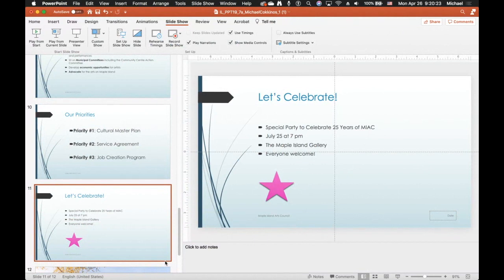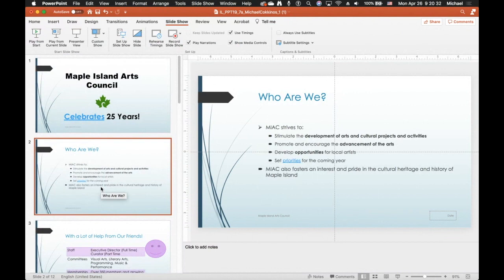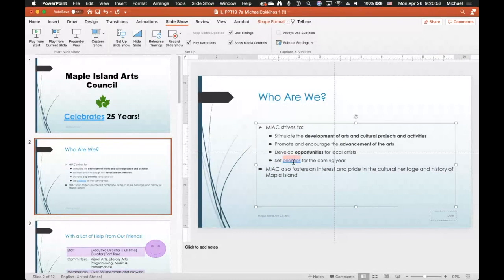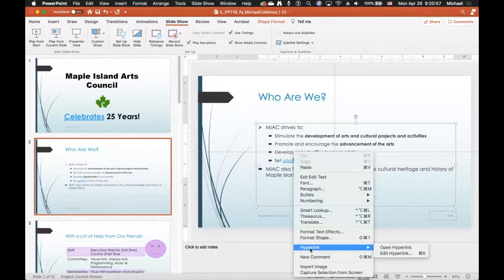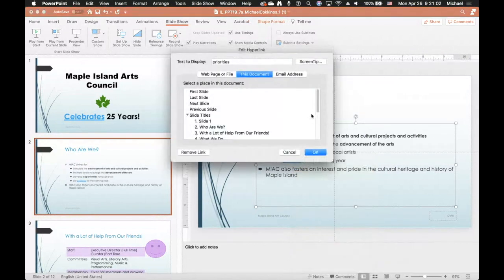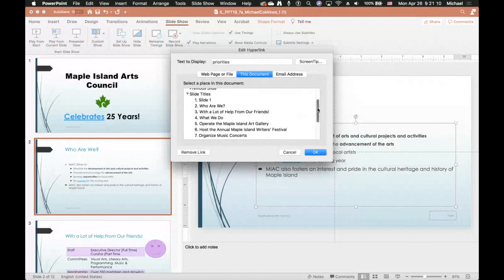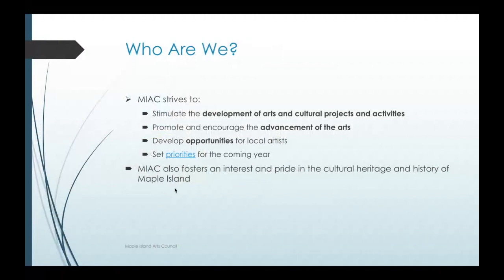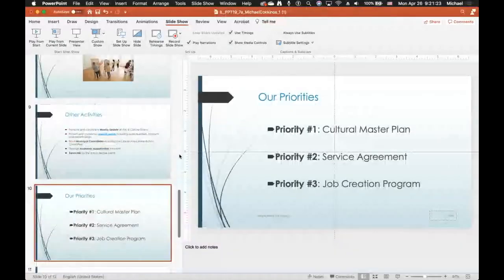On slide two, we need to edit the hyperlink for 'Priorities' so it goes to slide 10. Right-click, choose 'Edit Hyperlink,' and select slide 10 — 'Our Priorities.' We have the option to remove the link, but in this case we just edit it. Test it by playing from the current slide, and it takes us to the priority slide. PowerPoint is pretty friendly with internal hyperlinks.